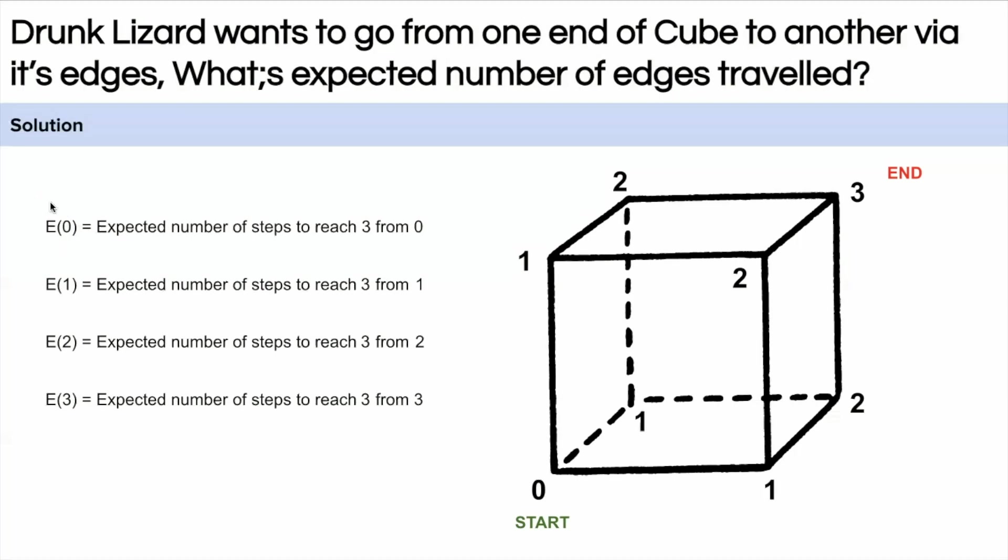So let's assume that E(0) is the expected number of steps taken from point zero to reach to three. That is what we need to calculate. E(1) is the expected number of steps to reach three from point one and E(2) is the expected number of steps to reach point three from two.